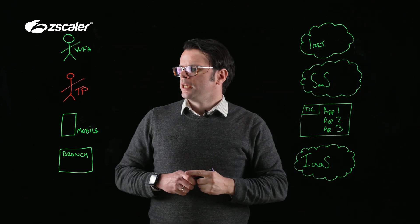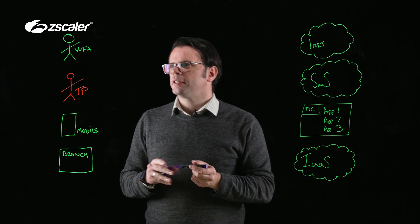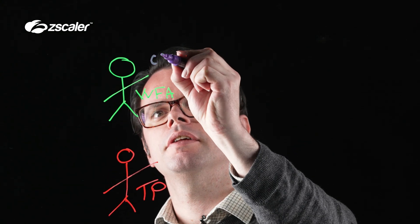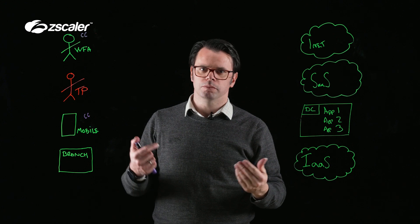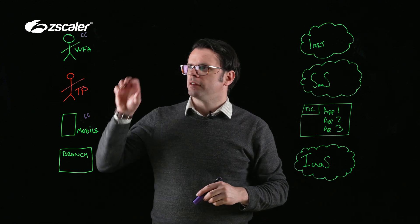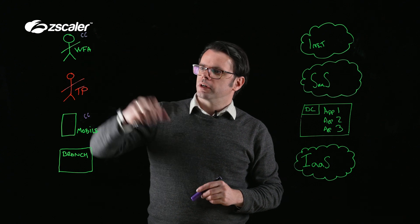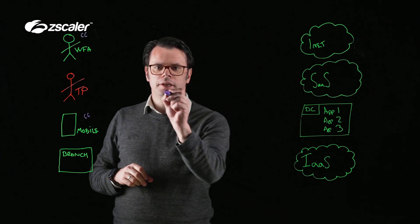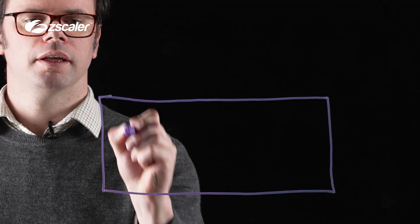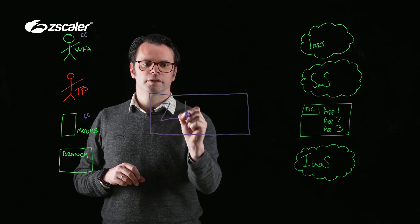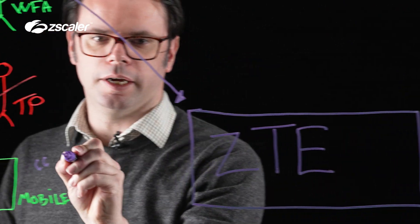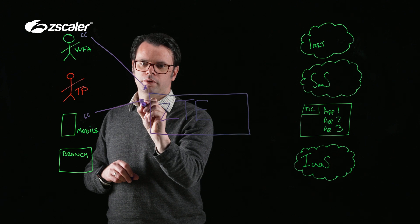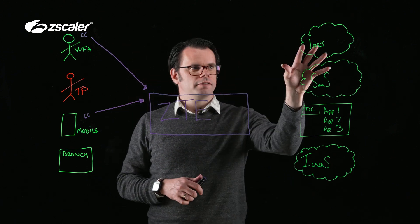So the Zero Trust Exchange. First thing we're going to do is we're going to put the Client Connector, which is a lightweight application, onto your corporate devices, which runs on Android, iOS, Windows, Mac OS, Linux - for any user-initiated device, any user-initiated traffic, we are going to deploy that client. That Client Connector is then going to connect into the Zero Trust Exchange. We're going to build a tunnel up to the ZTE.